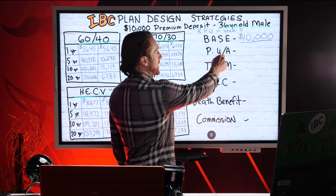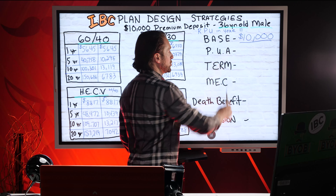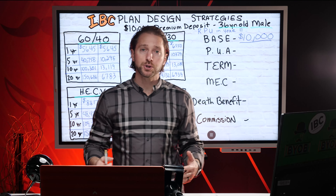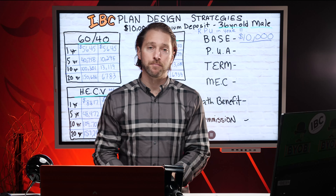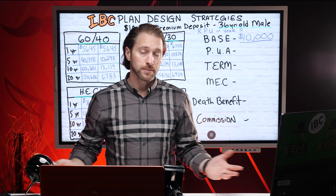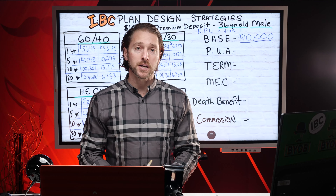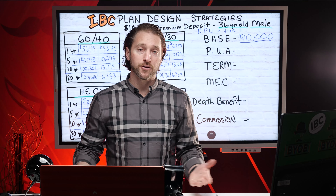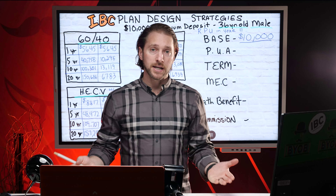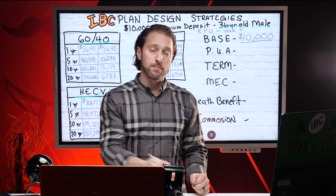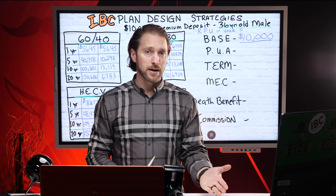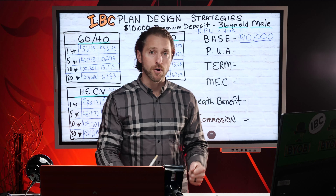So if we put $10,000 into the base whole life, how much money would you have in the first year? Zero. Second year? Probably zero. Third year? Pretty close to zero. So if we're designing a machine that's meant to move your money through and to take out and use, would you want a policy that only pays you zero? No.